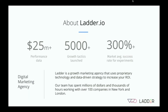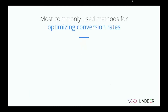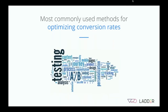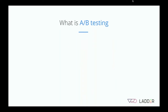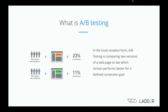Thanks Akash. I am quite excited to welcome everyone on the webinar and let's get started. To set context, I wanted to take this data point from a report from eConsultancy. One of the questions they asked respondents was: what are the most commonly used methods for optimizing conversion rates? A/B testing seems to be one of the predominant preferred ways. A quick definition: A/B testing is comparing two versions of a web page to see which version performs better for a defined conversion goal.